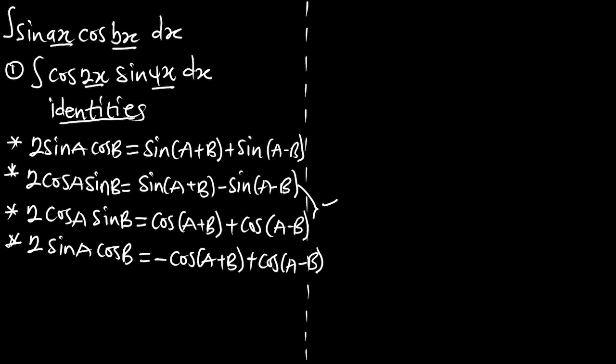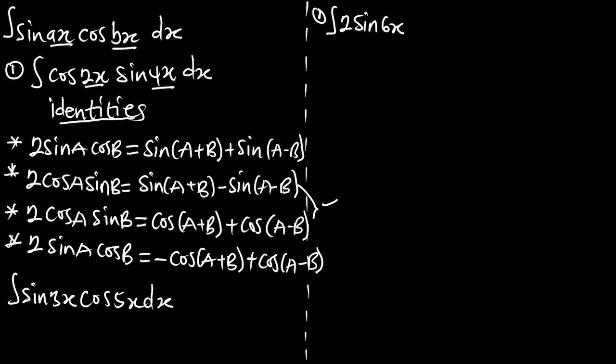You must get these identities off by heart — how to expand them with sine or with cosine. For example, if we have the integral of sine(3x) cos(5x) dx, we can identify the matching identity and replace it with either the sine or cosine form. Let's take example one: evaluate the integral of 2 sin(6x) cos(2x) dx.